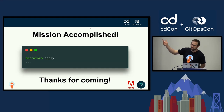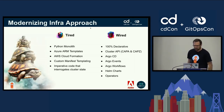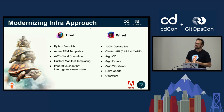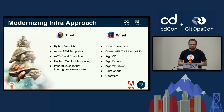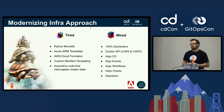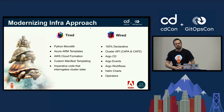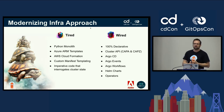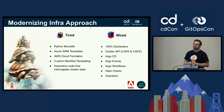So what did we do? Not just Terraform apply. Where they were coming from: they had a big Python monolith, a lot of Azure ARM templates, AWS CloudFormation templates, a lot of very custom manifest templating, and a lot of imperative operations. The whole thrust of GitOps is to get away from imperative and start doing declarative. So we wanted to move to 100% declarative structure, taking advantage of Cluster API for cluster provisioning, Argo CD, the full suite using Helm charts, and operators where needed.